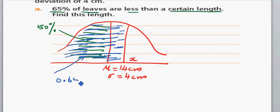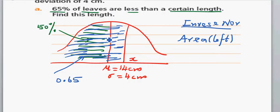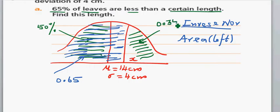You have to do inverse normal on your calculator. Go to inverse normal and enter the area. On your calculator you can enter the left area, the right area, or the center area. Here the area is to the left of x, so the left area is 0.65 and the right area is 0.35, because the total probability is 1. So the left area is 0.65, the standard deviation is 4, and mu is 14 cm.